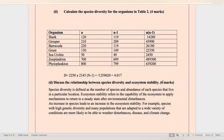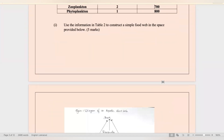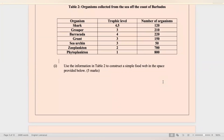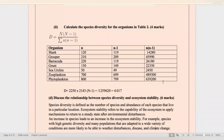The next question says: calculate the species diversity for the organisms in table 2. The best formula to use is the Simpson's index. D represents the diversity of species, capital N represents the total number of organisms of all species combined, and the smaller n represents the number of individuals of a particular species. Drawing a table makes the data easy to calculate in the examination. Filling in the values from the table, you arrive at a diversity of 4.017.